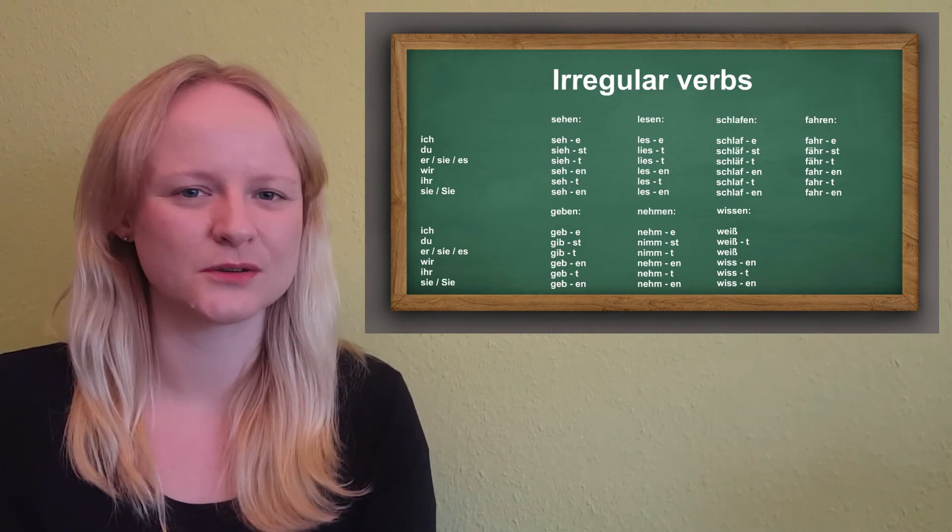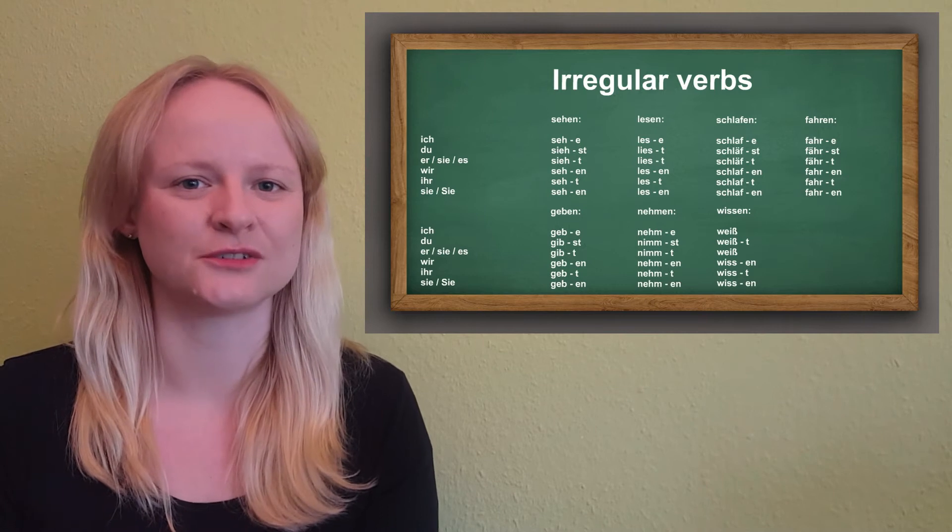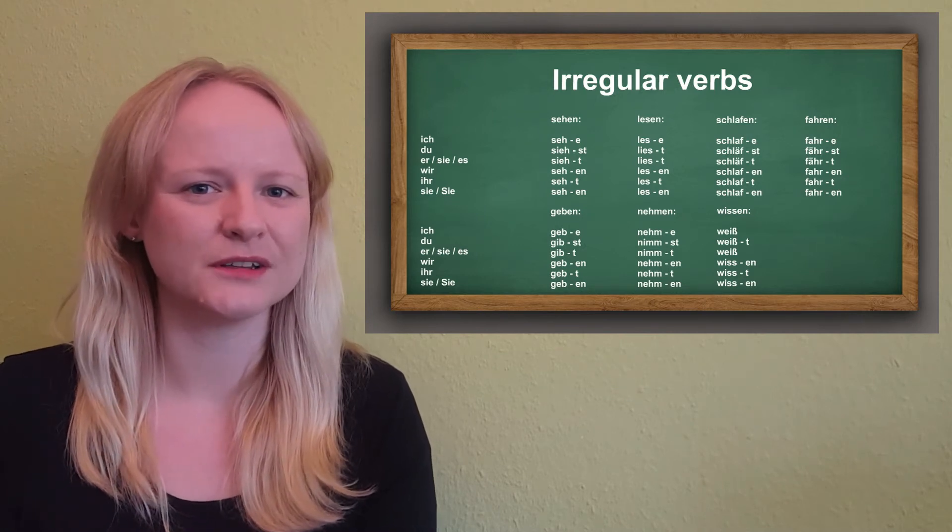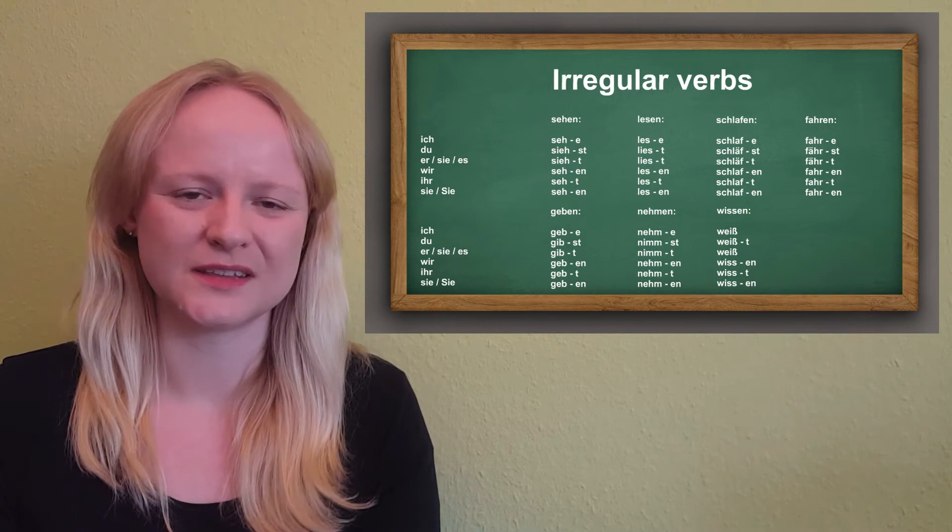Now irregular verbs are verbs whose stems actually do change during conjugation. However, usually not for all forms. Let's look at them in detail.